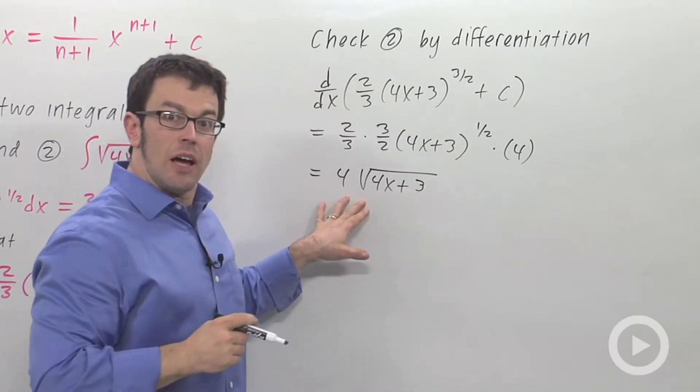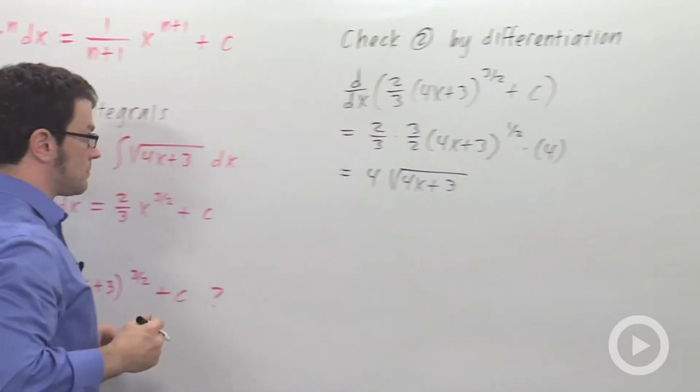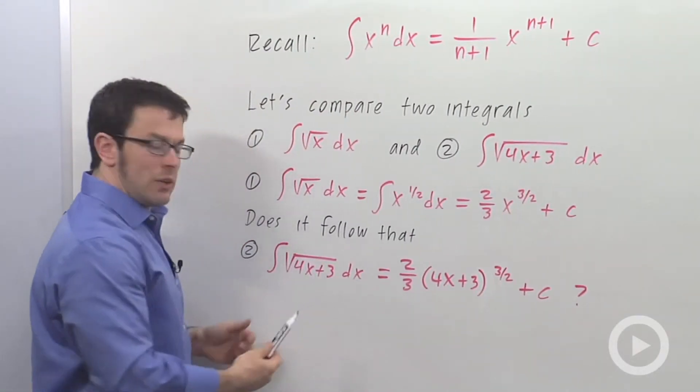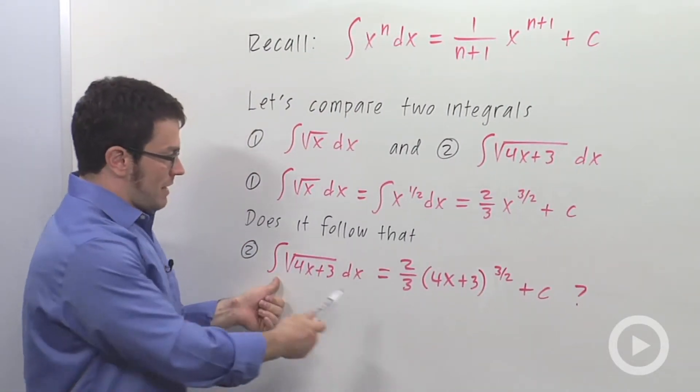Now, let's take a look at what we started with, the integral of root 4x plus 3. We didn't have a 4 in front, so this method has not worked.